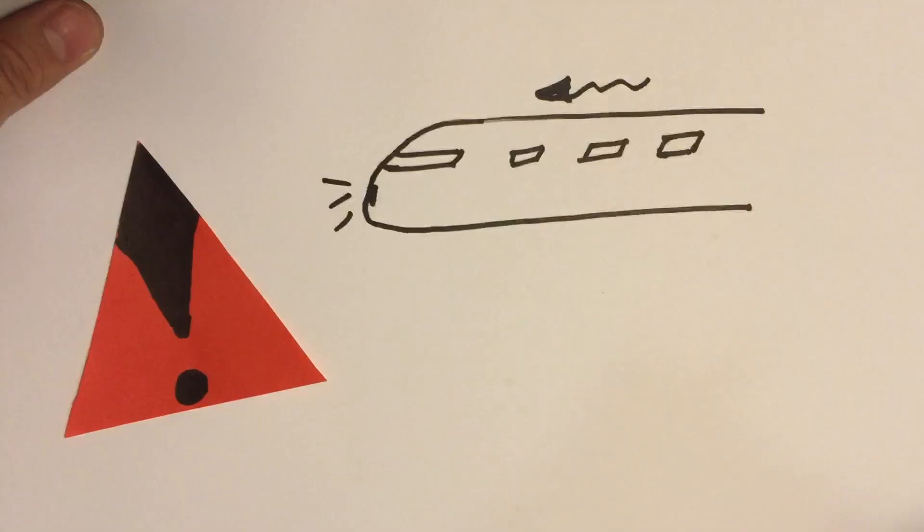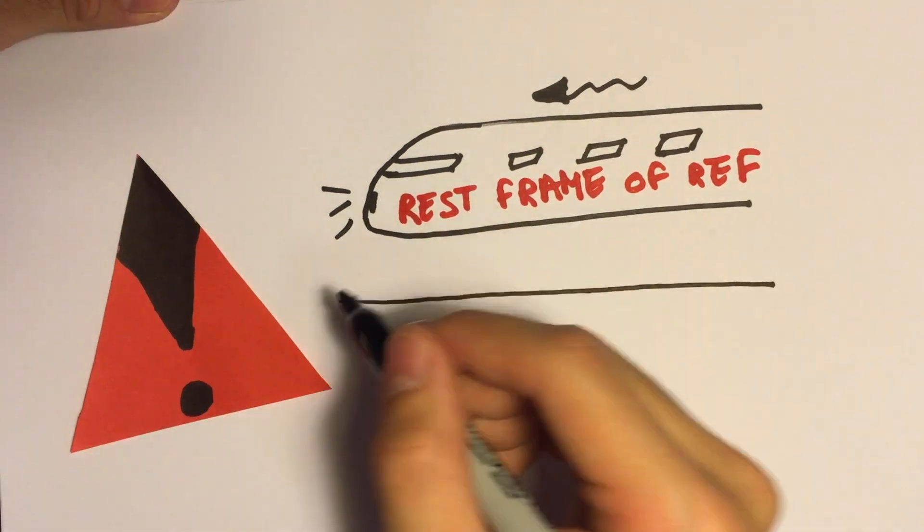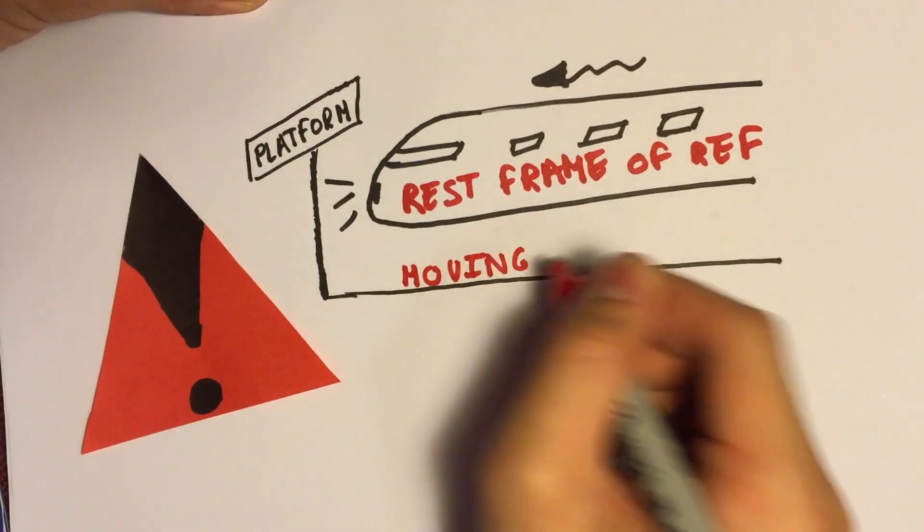Pay attention, though the train is moving, it's considered to be the rest frame of reference, whereas the platform is the moving frame of reference, and that's because the action happens in the train itself.